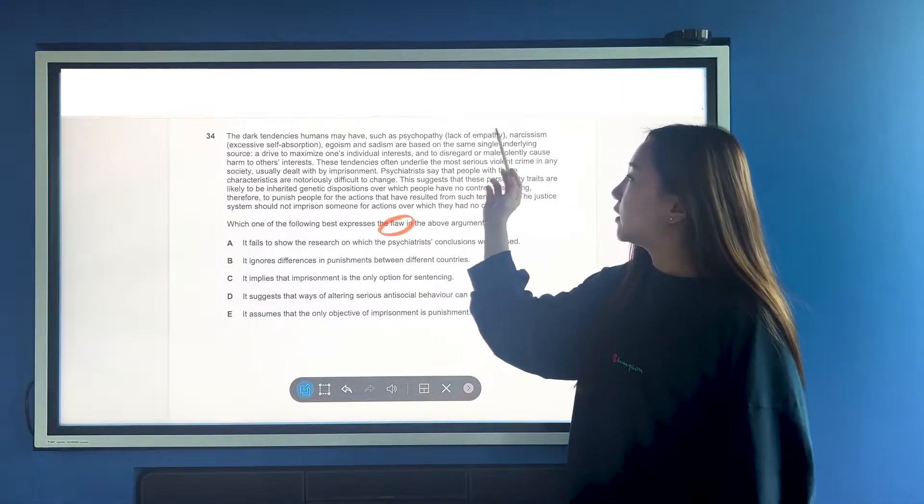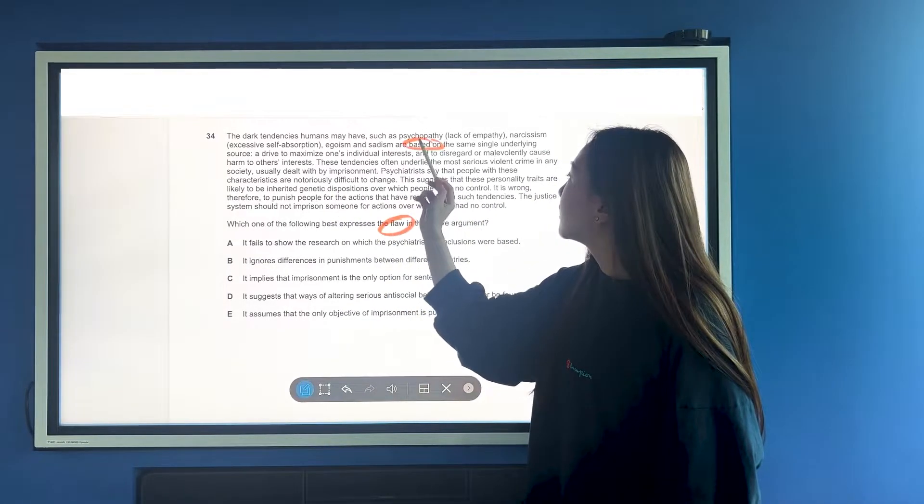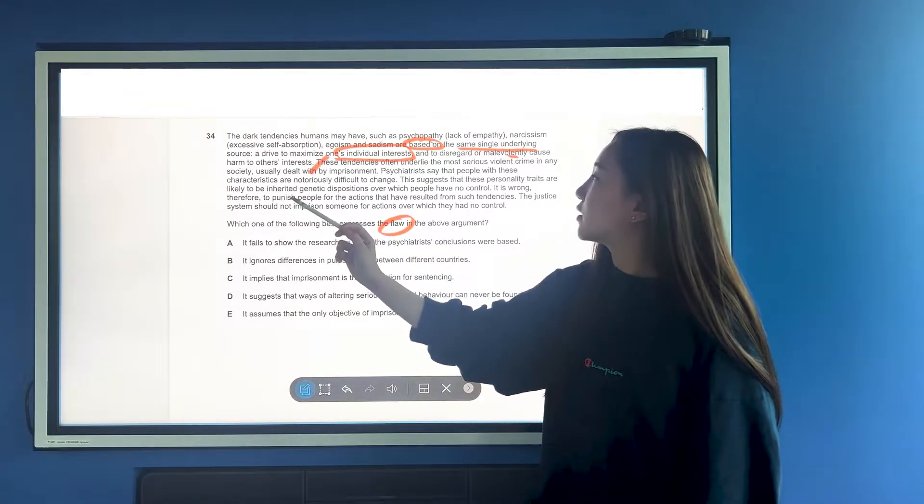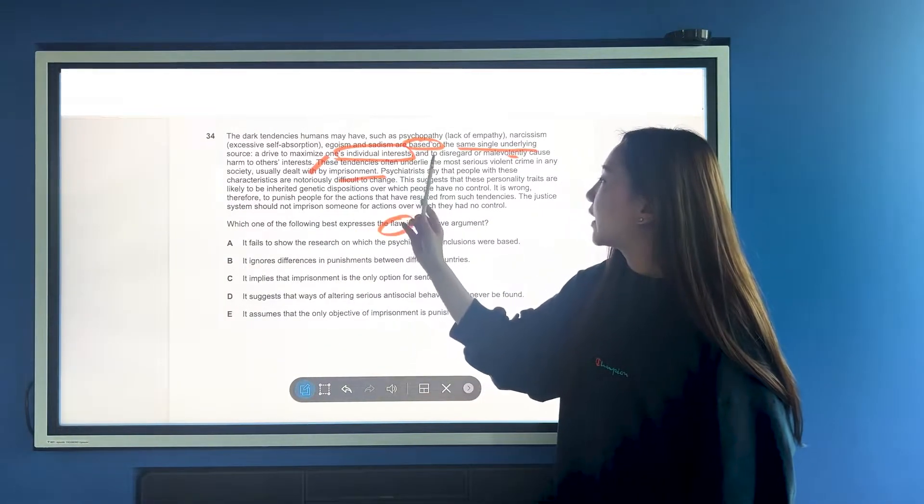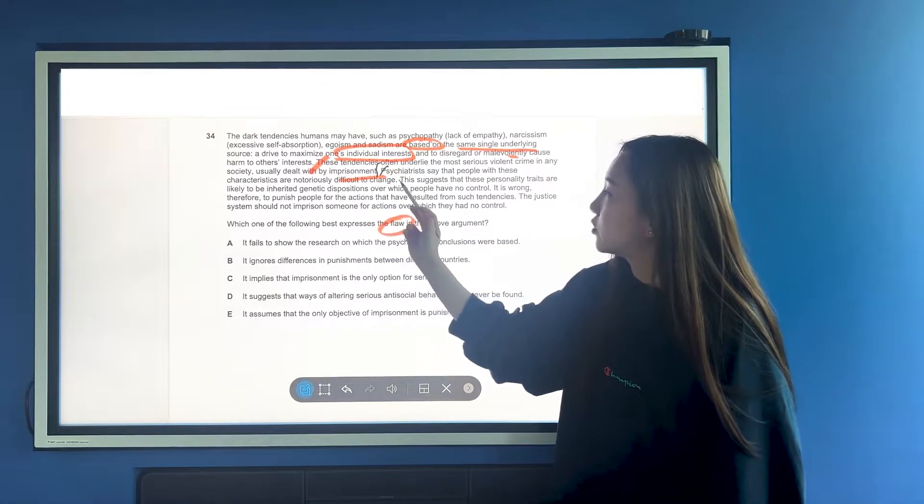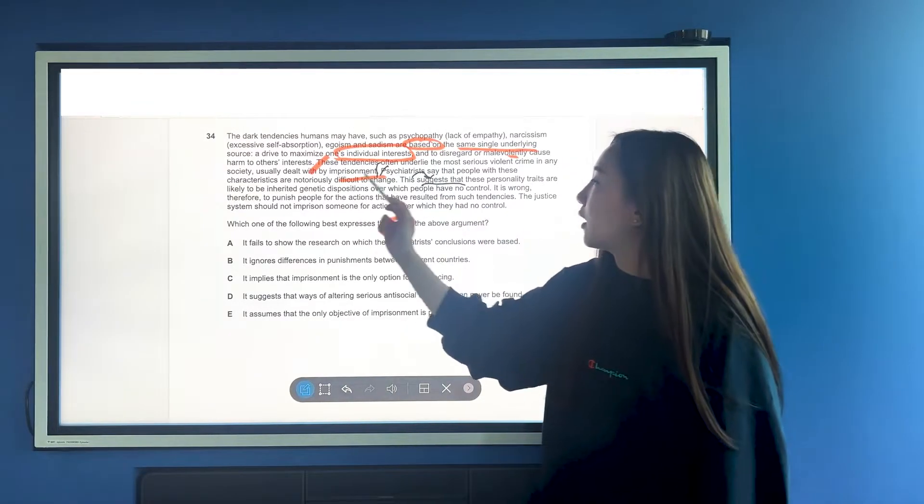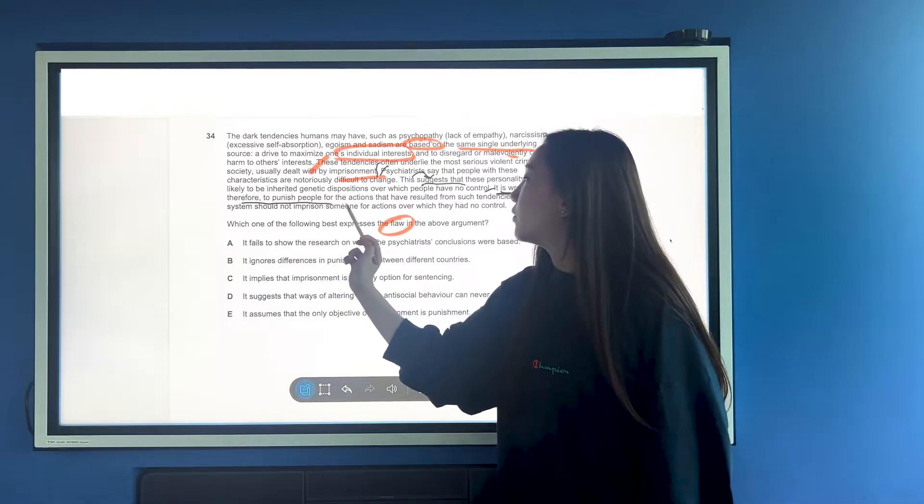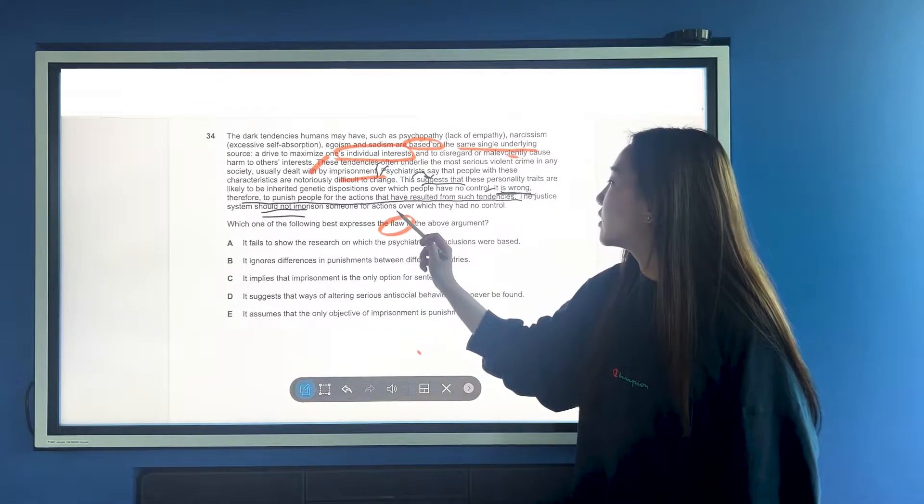Let's do the same thing again. The dark tendencies humans may have such as psychopathy, narcissism, egoism, are based on the same underlying source - to maximising one individual interest, and to disregard or malevolently cause harm to others' interests. All of this is stem. These tendencies often underlie the most serious violent crime in any society usually dealt with by imprisonment. Again, all of this is stem. Now we're going to get into the argument. Psychiatrists say that people with these characteristics are notoriously difficult to change. This suggests, tells us this is the argument now, are likely to be inherited genetic dispositions in which people have no control. It is wrong, okay, here's our conclusion, therefore, to punish people for the actions that have resulted from such tendencies.